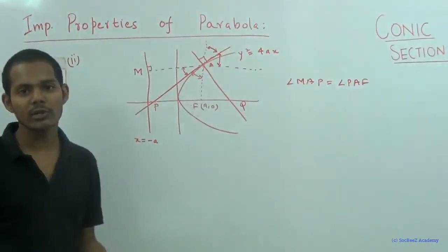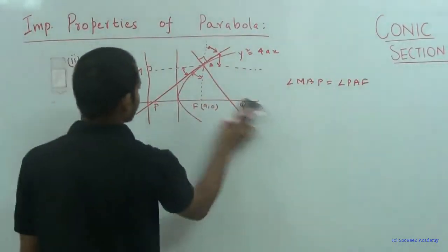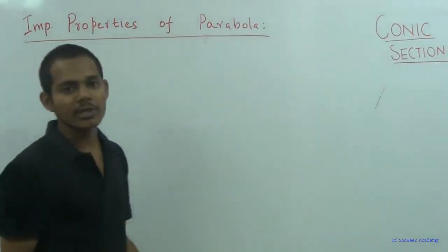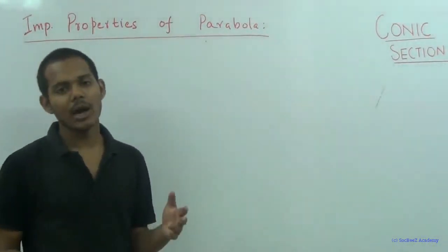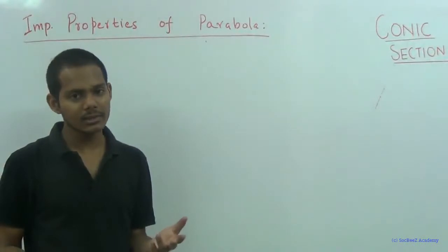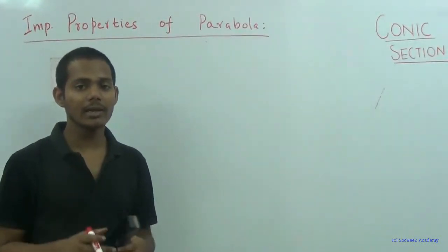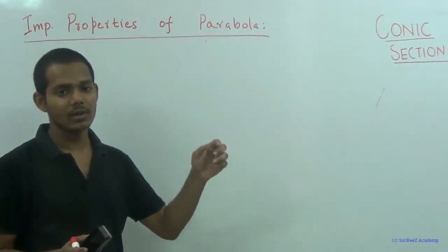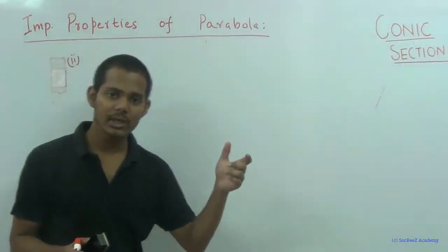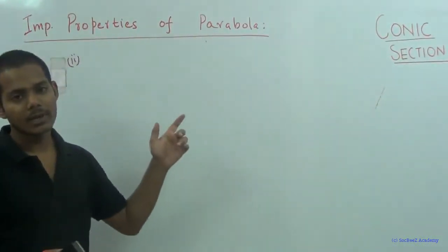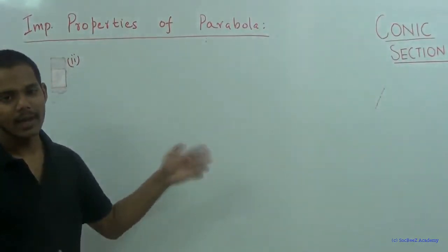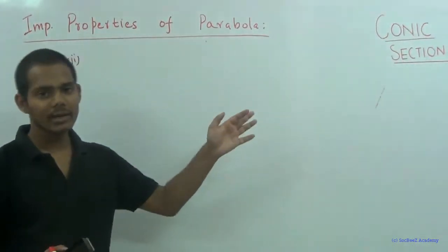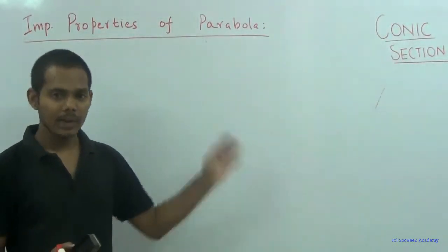In the second property we saw that the tangent and normal at any point on the parabola are the angle bisectors of the angle formed by the focal radius and the line parallel to the x-axis drawn through that point — which is the perpendicular distance from the directrix. That angle is bisected by the tangent and the supplementary angle is bisected by the normal.